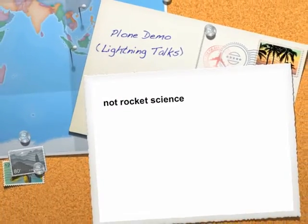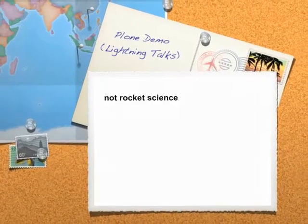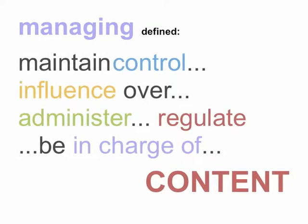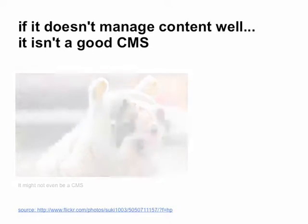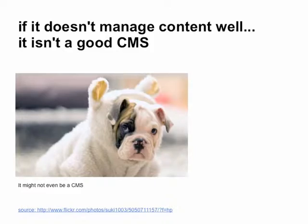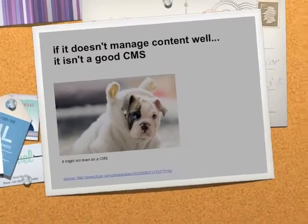The premise of a content management system is about content management. Managing content is pretty much like managing a desktop — you have files and you want to organize them, put things where they should be, know where to look for things, and regulate how your content works. If your platform isn't tailored for doing these things, you may not actually have a content management system. It might be a blogging platform or something else.